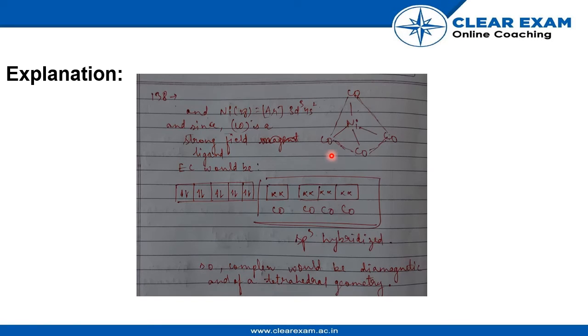For Ni(CO)4, where the configuration of Ni is argon 3d8 4s2, and since CO is a strong ligand, the electronic configuration of Ni would be this, where four CO are attached in the outermost orbits, which makes the configuration sp3 hybridized.